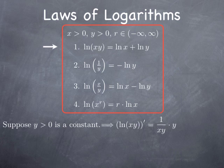Using the chain rule: the derivative of ln(xy) is 1 over xy times y, since y is a constant and the derivative of xy with respect to x is y. The y terms cancel and we get 1 over x. In other words, the derivative of ln(xy) is the same as the derivative of ln(x).